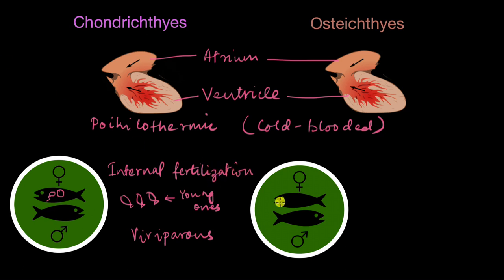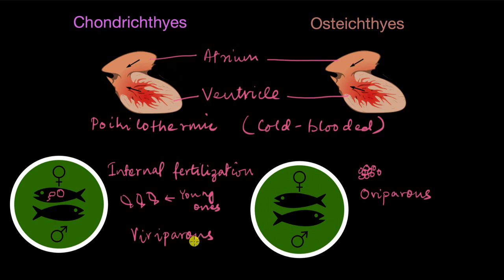In Osteichthyes, before fertilization they lay eggs outside in the water, hence they are called oviparous. Oviparous animals lay eggs, whereas viviparous animals give birth to young ones. Since the eggs are laid outside, fertilization also happens outside — the sperm comes in and fuses with the eggs in the water — so the fertilization is external.